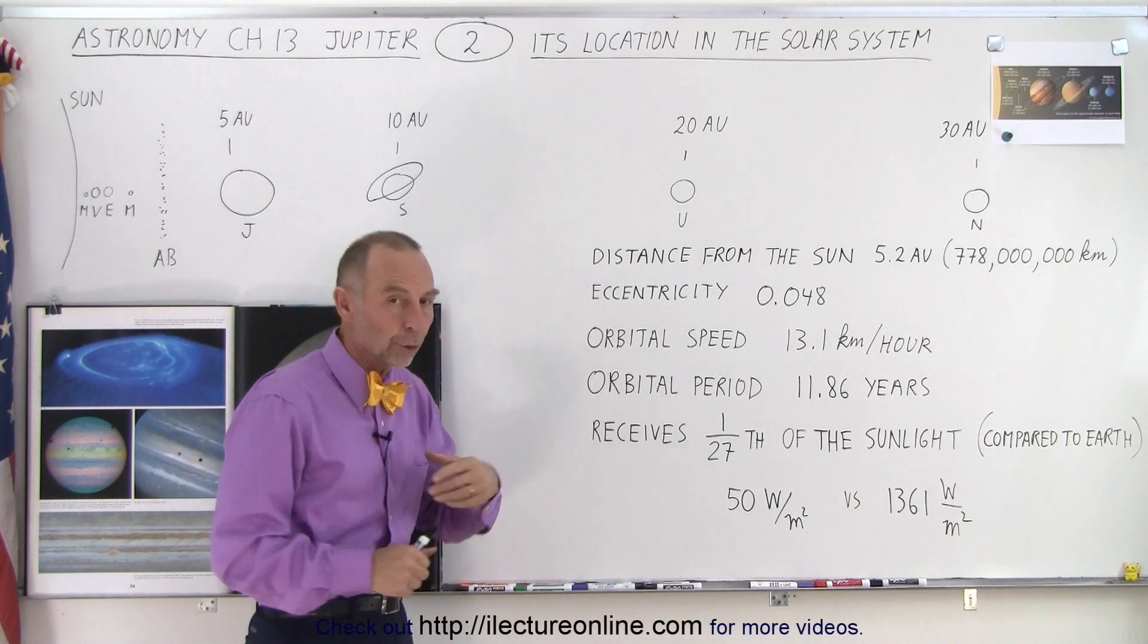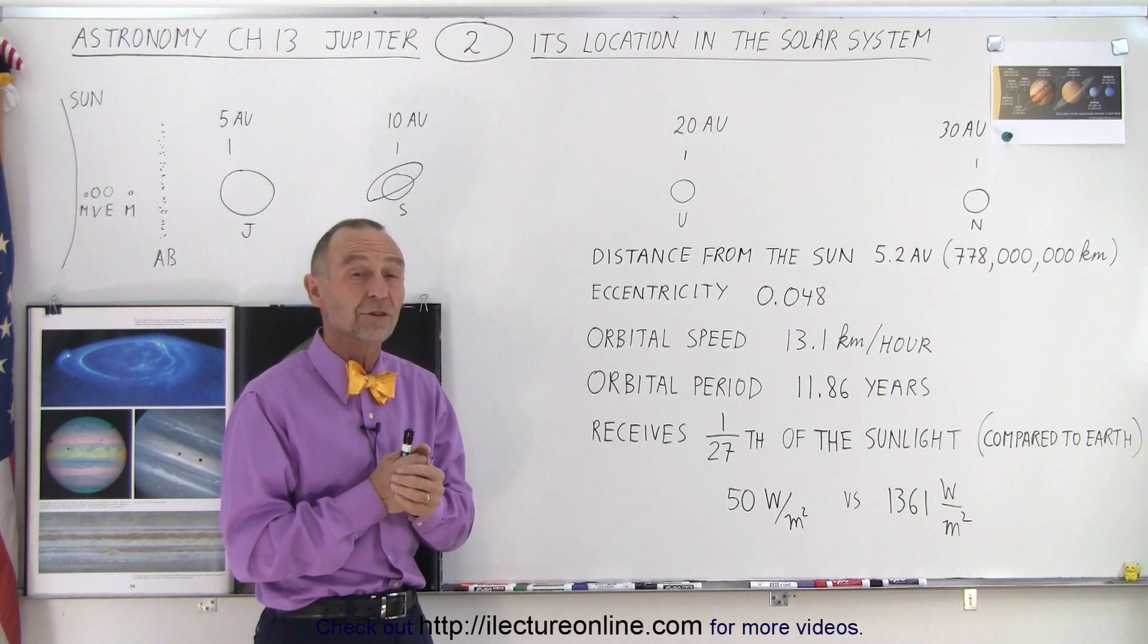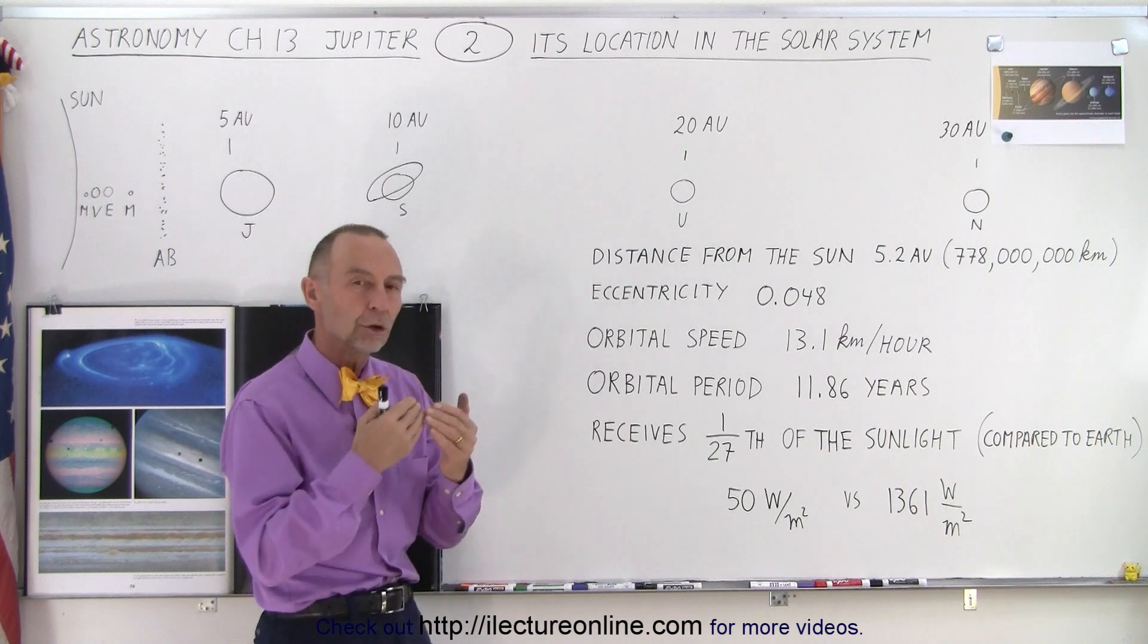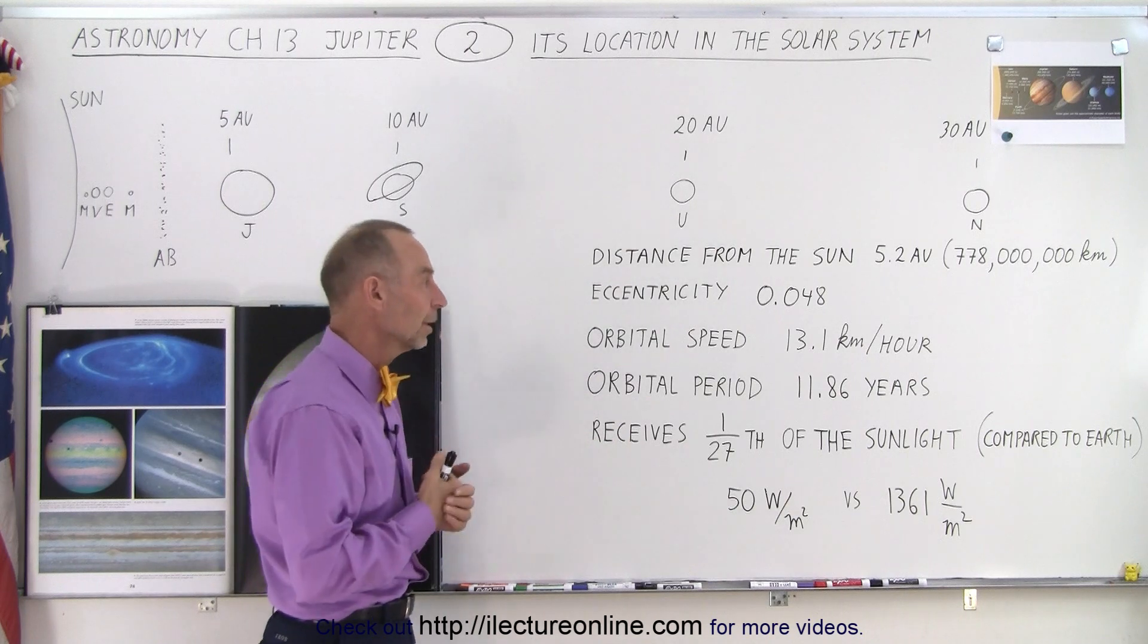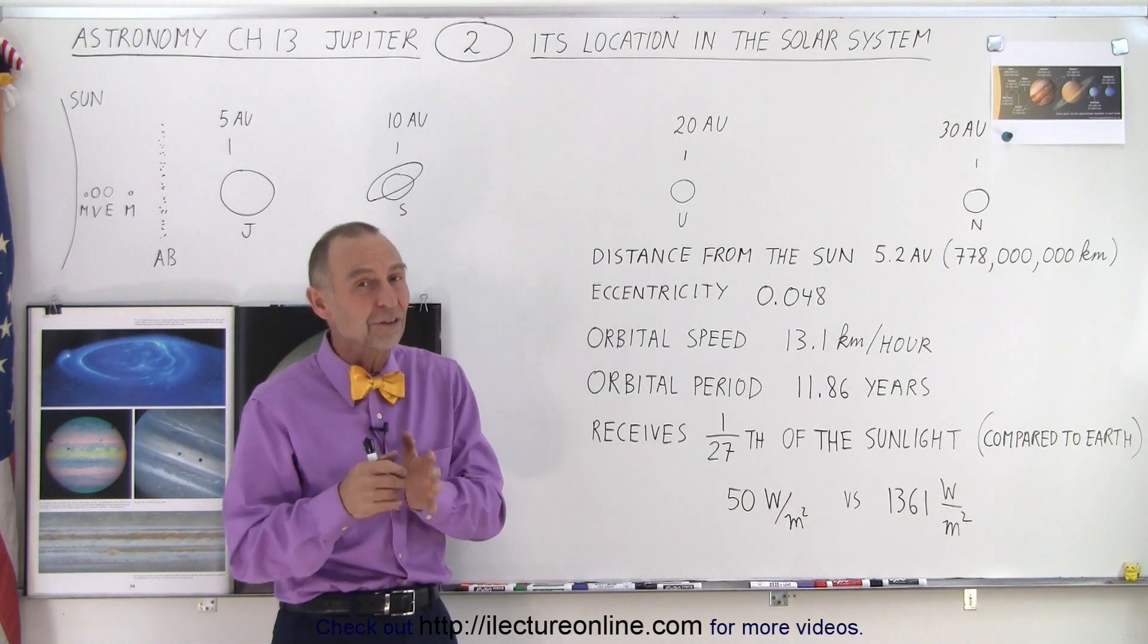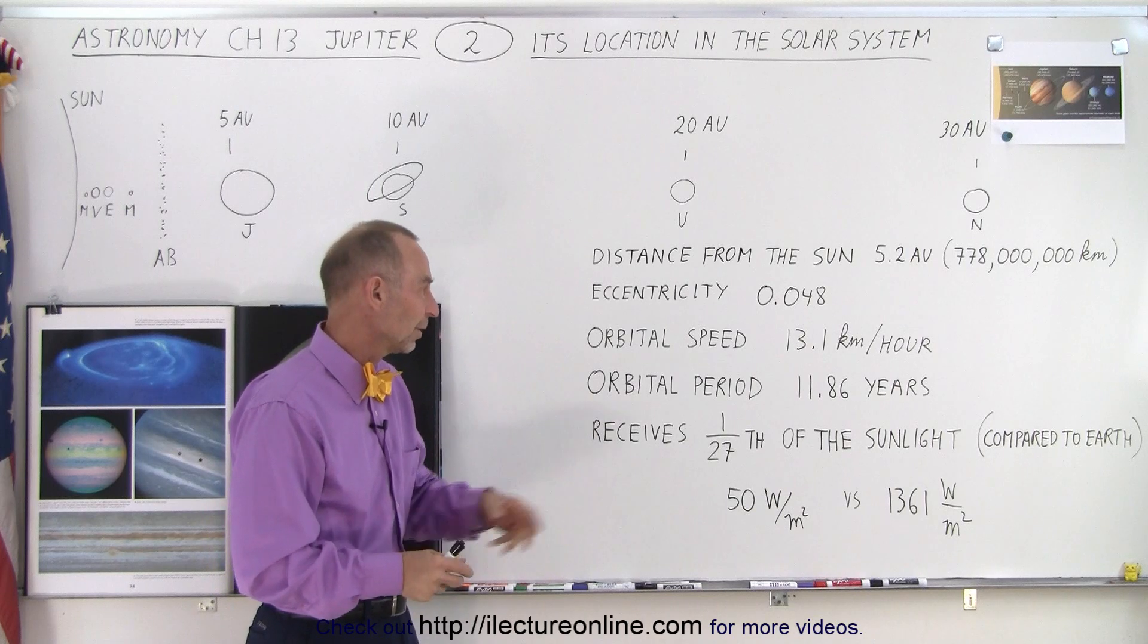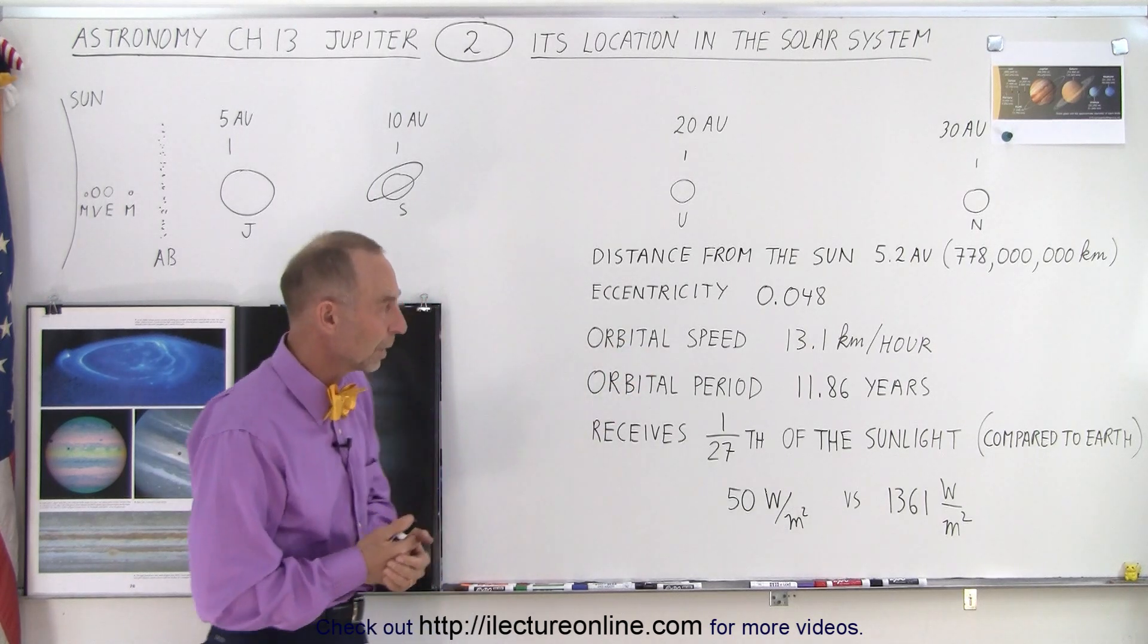Notice that the eccentricity of the orbit is 0.048, which is about three times the eccentricity of the earth. In other words, there's a little bit more variation between the closer and the farthest distance away from the sun as it goes around the orbit. The orbit around the sun at a speed of about 13.1 kilometers per hour, which is about 40 percent the speed of the earth. The earth is almost 30 kilometers per hour as it goes around the sun. The orbital speed for Jupiter about 13.1 kilometers per hour.